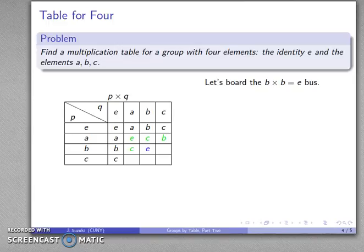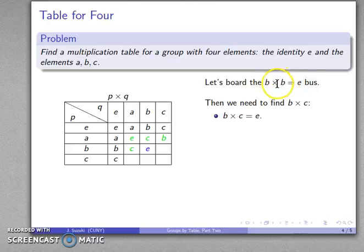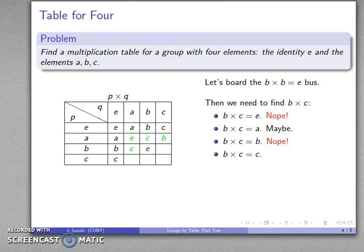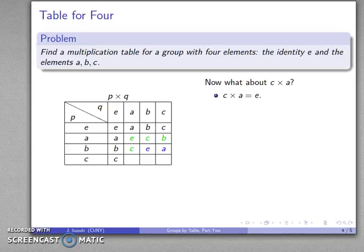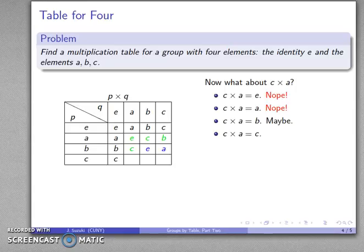We get on the B×B=E bus and need to find B times C. B times C equals E would make B and C inverses, but I already know what the inverse of B is, so that won't work. B times C equals A — no obvious reason we can't have that, so that's our only possibility. For C times A: it can't be E because A inverse is already A; C times A equals A or C is also ruled out; so C times A equals B is our only possibility.